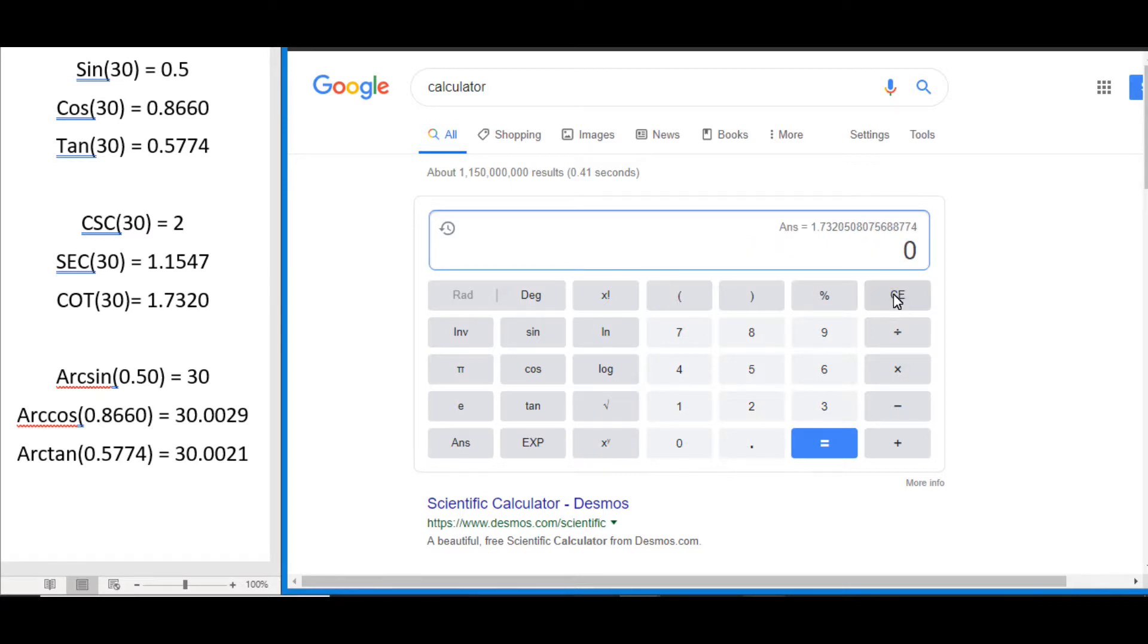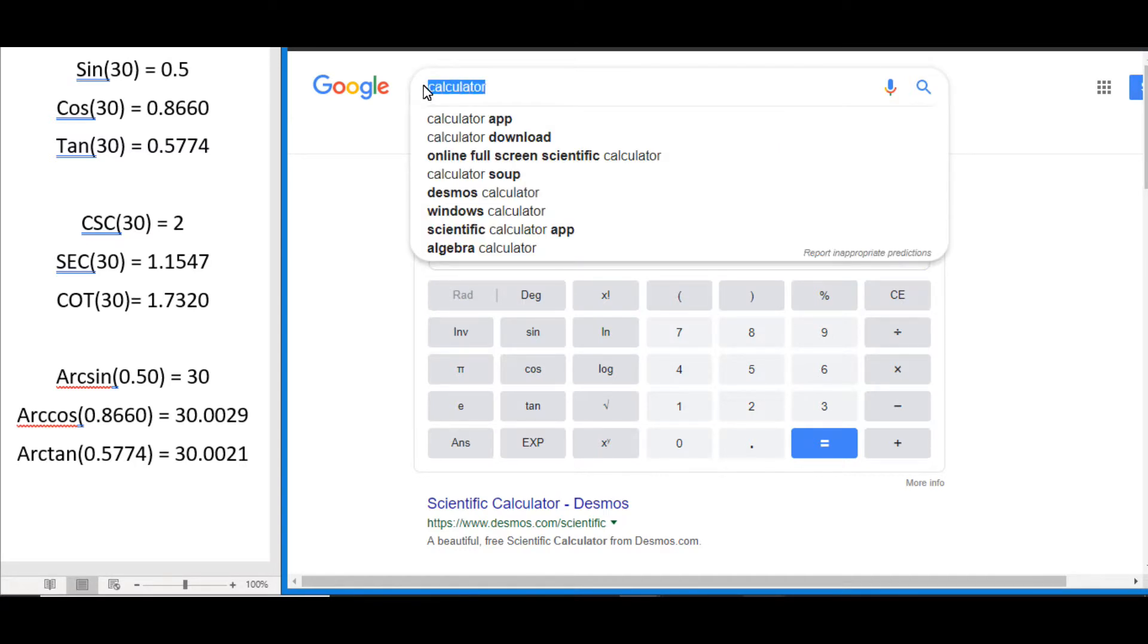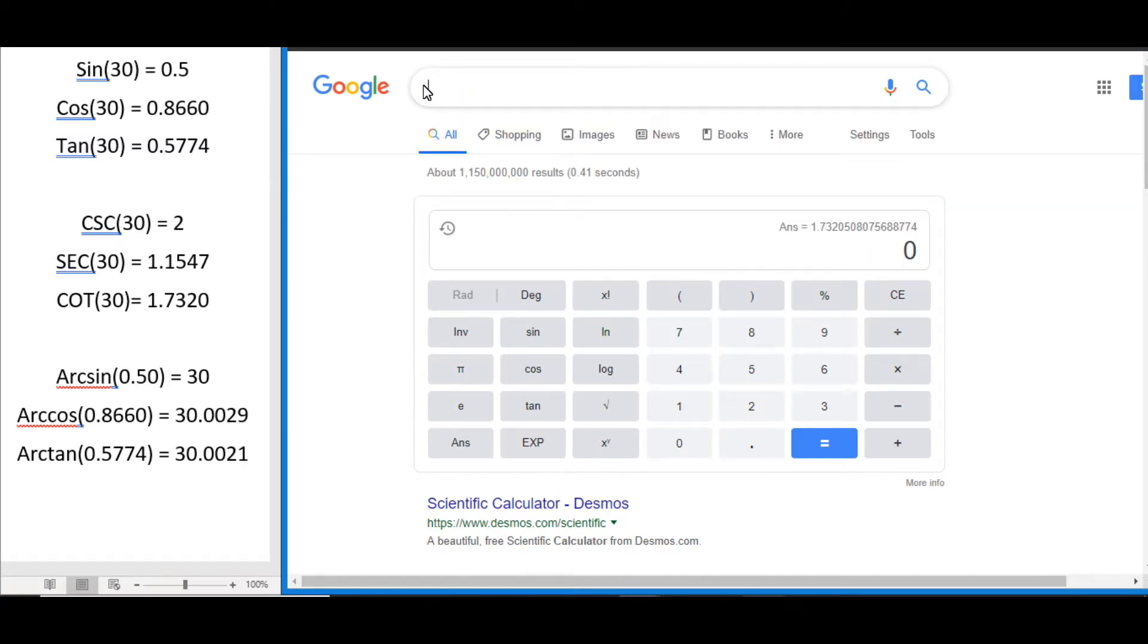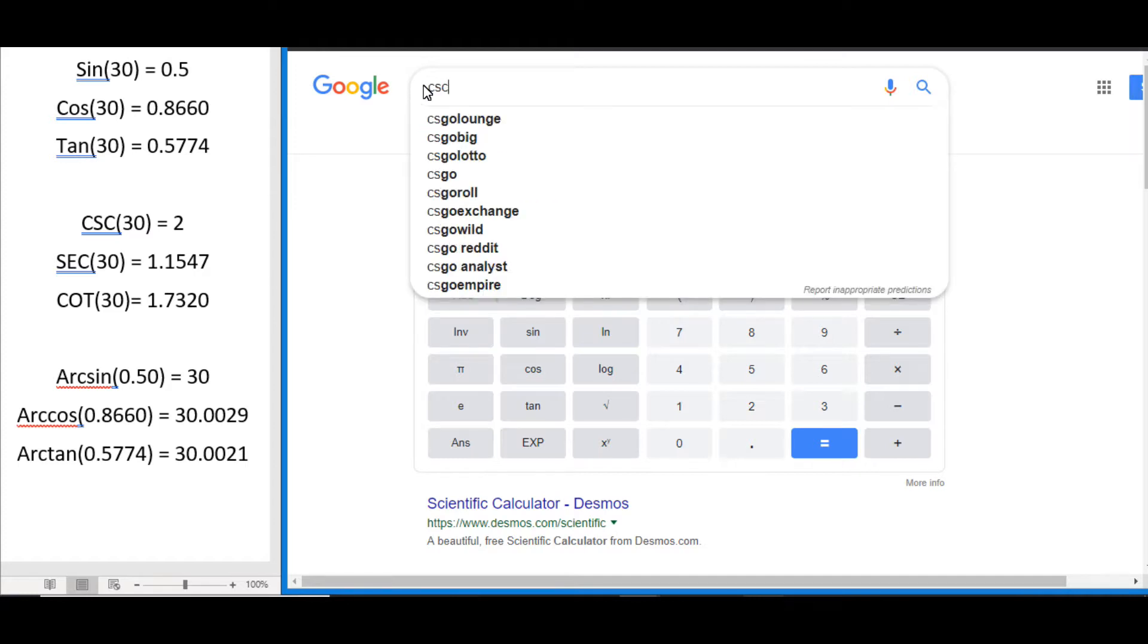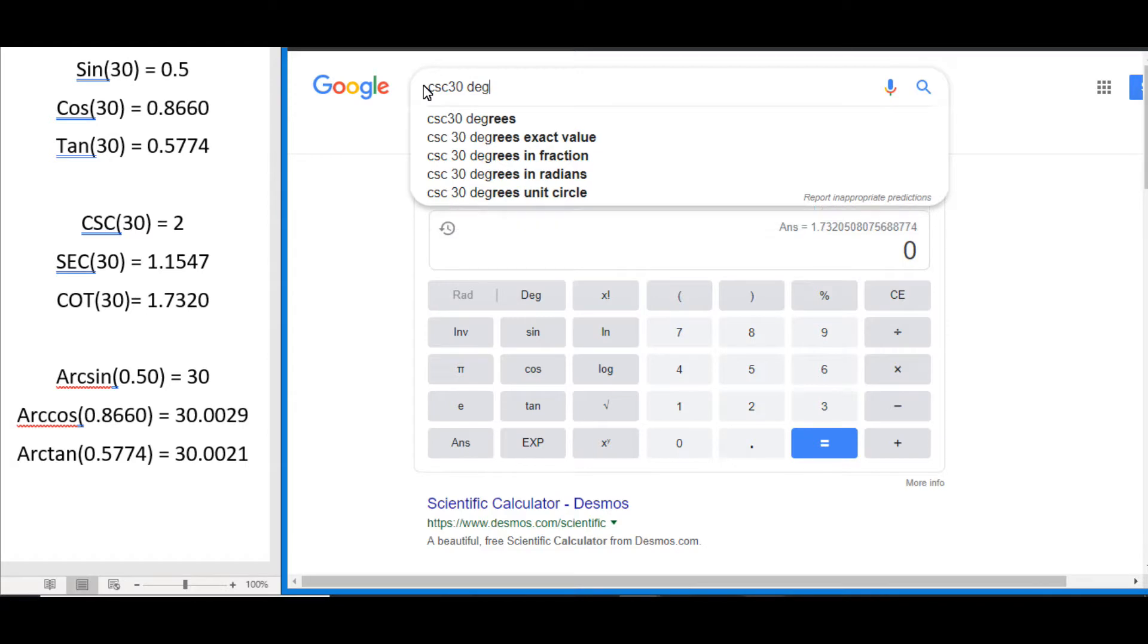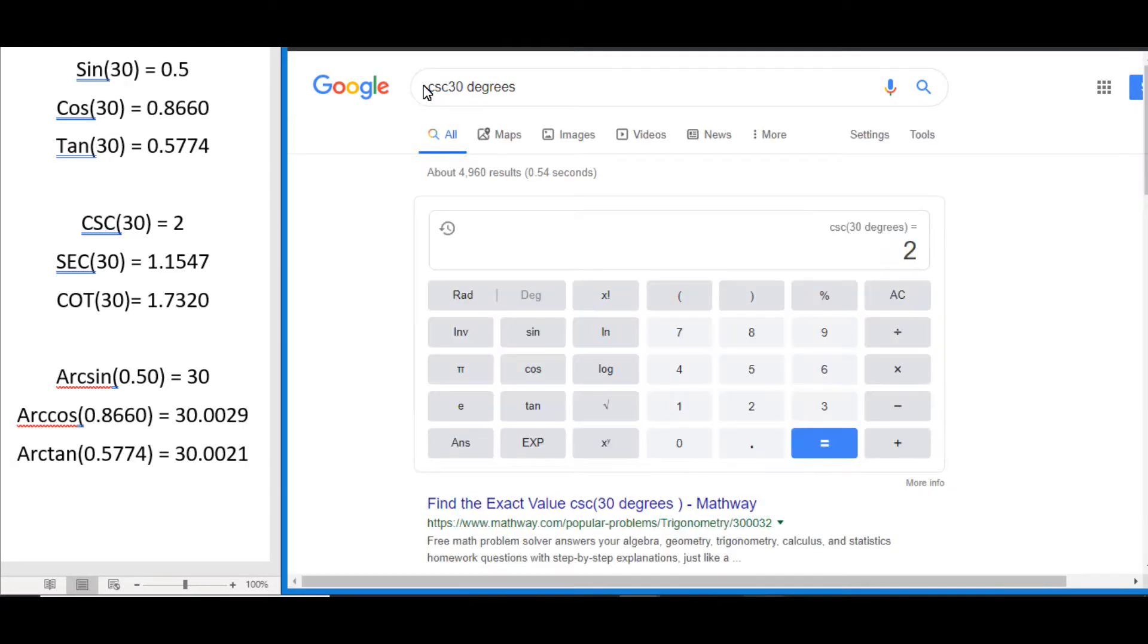You can also solve these by entering them into the Google search bar, but remember that Google always assumes radians, so you have to add degrees to the end. So for example cosecant of 30, we can just type in cosec or csc 30 space and then we add degrees. Press enter and you can see it solved it there for us.